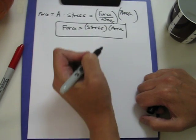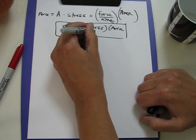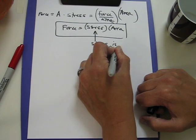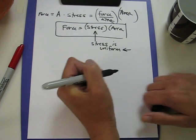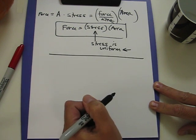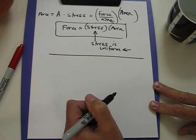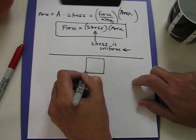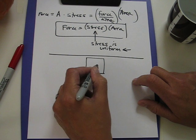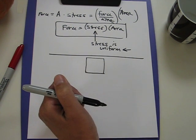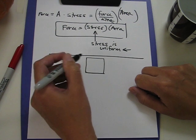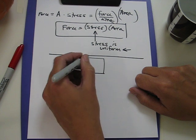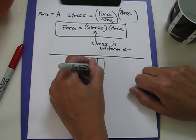Now, the stress being uniform means that the stress does not vary in position across the surface. We could just as well imagine a surface where the stress is different at different points along the surface. This happens quite often in fluid mechanics. So if the stress on the surface is varying with position, we need to divide the surface into small pieces.